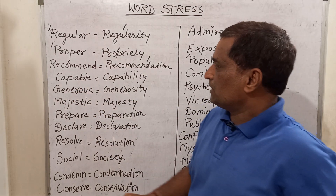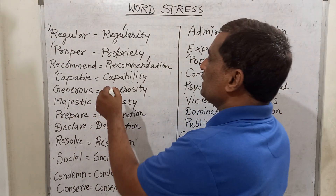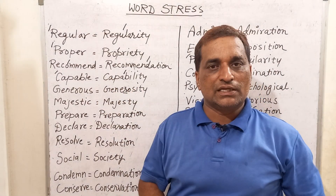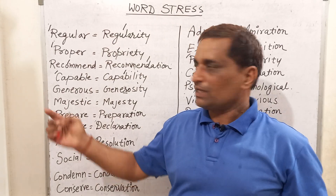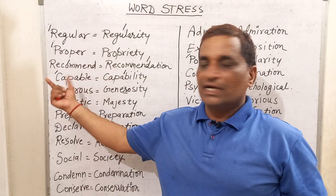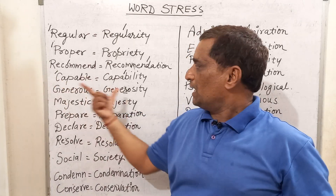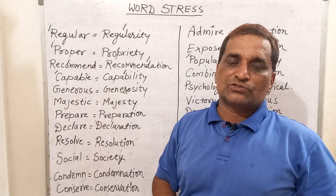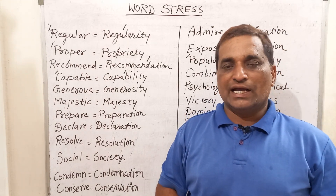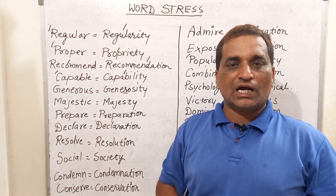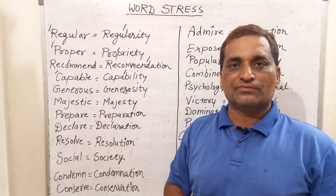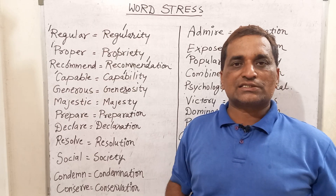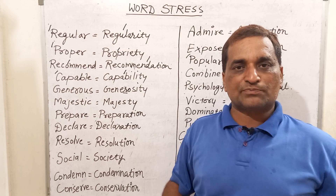Next is 'capable' — the stress will come before C: 'capable'. And 'capability' — the stress will come before B: 'capability'. So when we pronounce 'capable', stress comes before C, and when we pronounce 'capability', stress comes before B. This is the unique thing of this language. Don't be frightened with these signs; you should consult the dictionary regularly so that your fear may be dispelled.